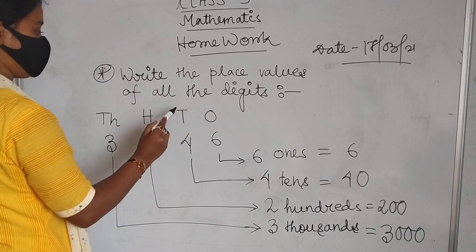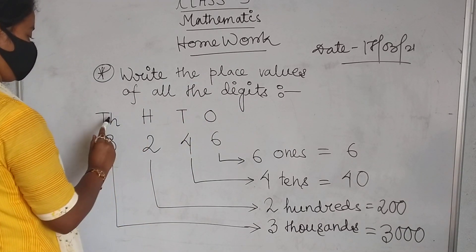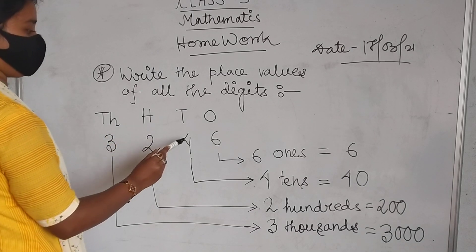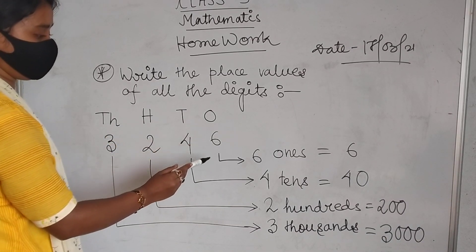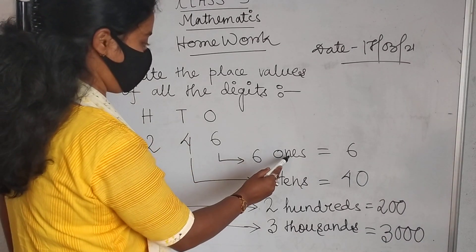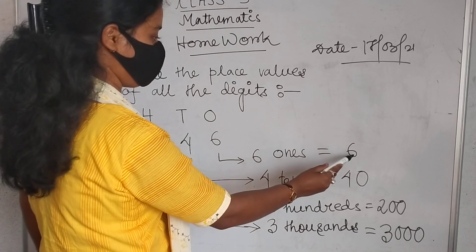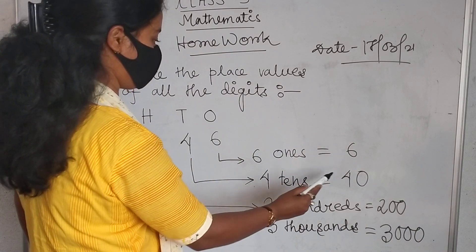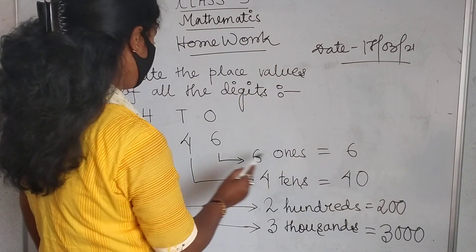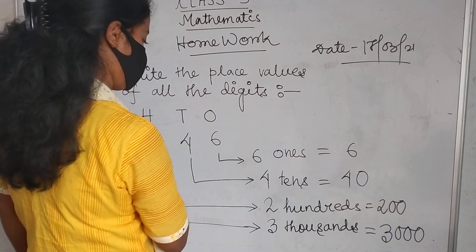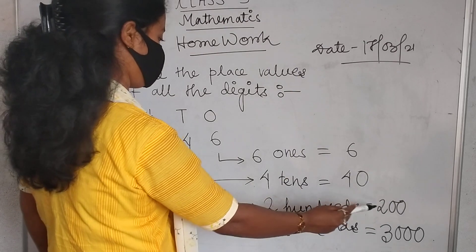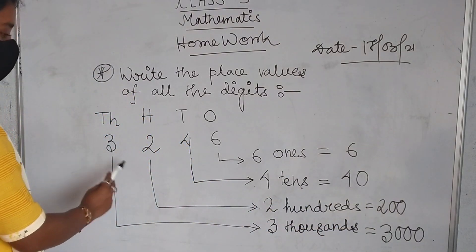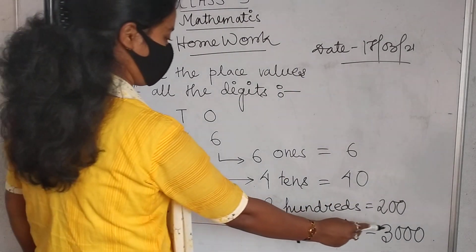So, 1s, 10s, 100s, 1000s. 6 ones equal to 6, then 4 tens equal to 40, then 2 hundreds equal to 200, then 3 thousands equal to 3,000.